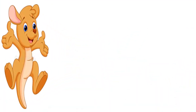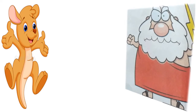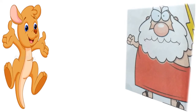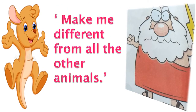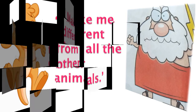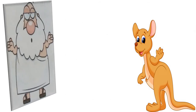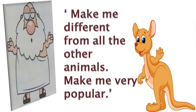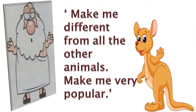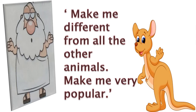So he went to the little god Why and said, 'Make me different from all the other animals.' But the little god shouted at him and told him to go away. The kangaroo then went to the middle god Wing and said, 'Make me different from all the other animals, make me popular.' But the middle god stood without a smile and told him to go away.